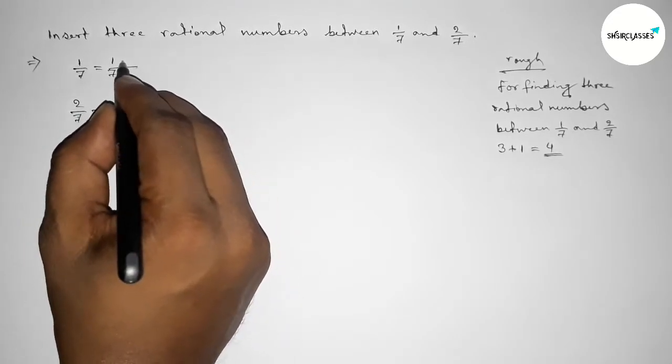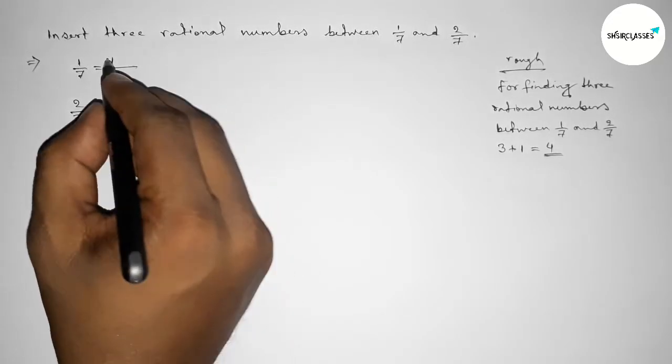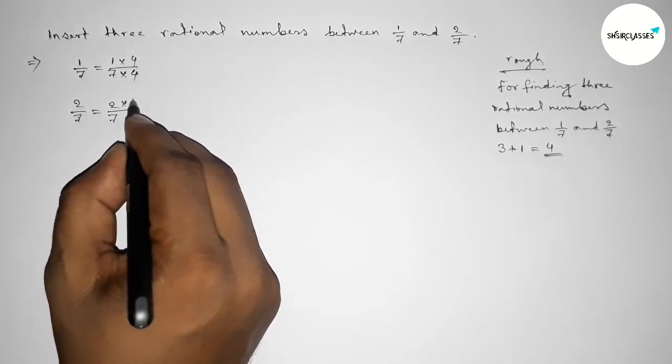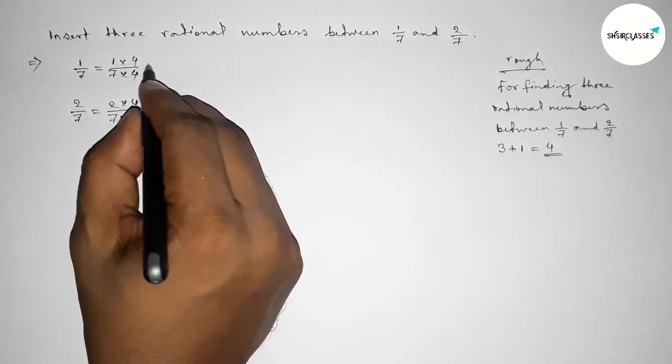So 3 plus 1 equal to 4. Now multiplying 4 with both numbers by this way, so here and here. So here 4 over 4 and here similarly 4 over 4.